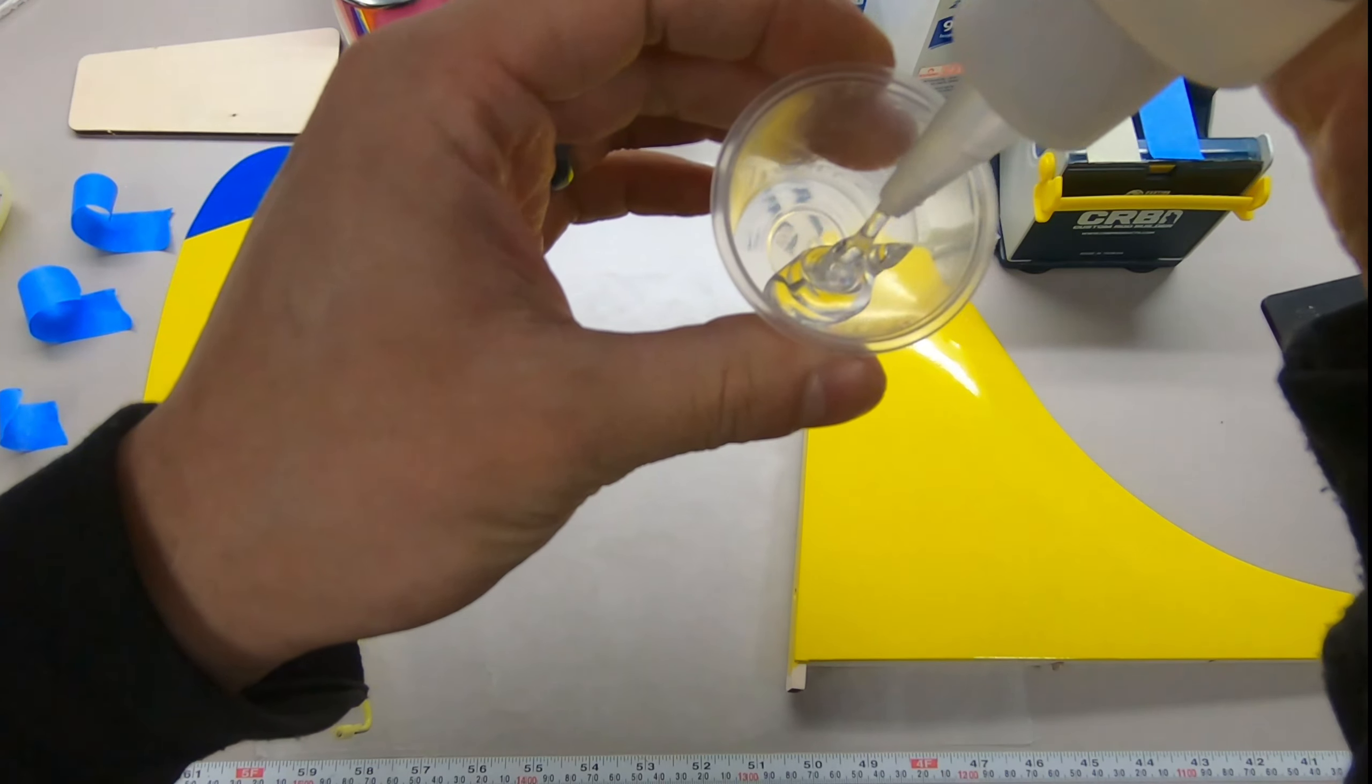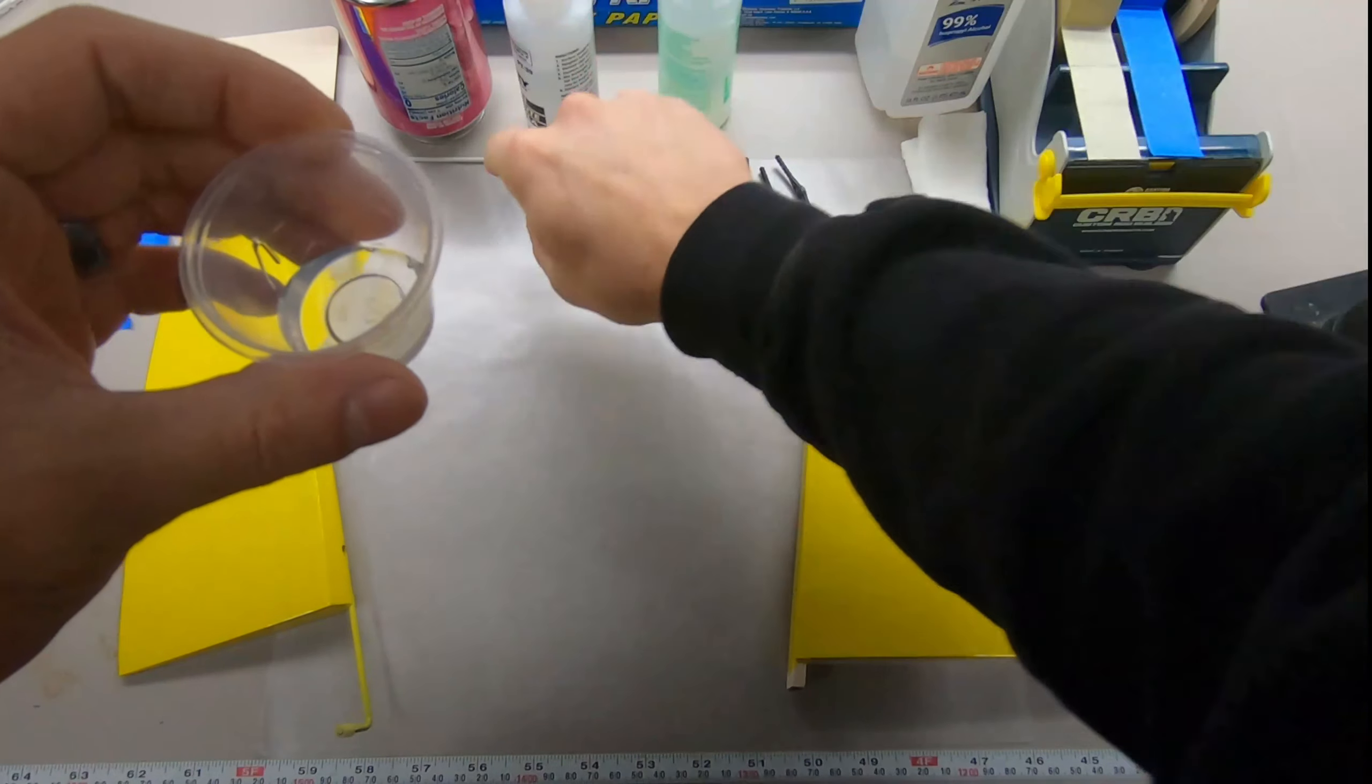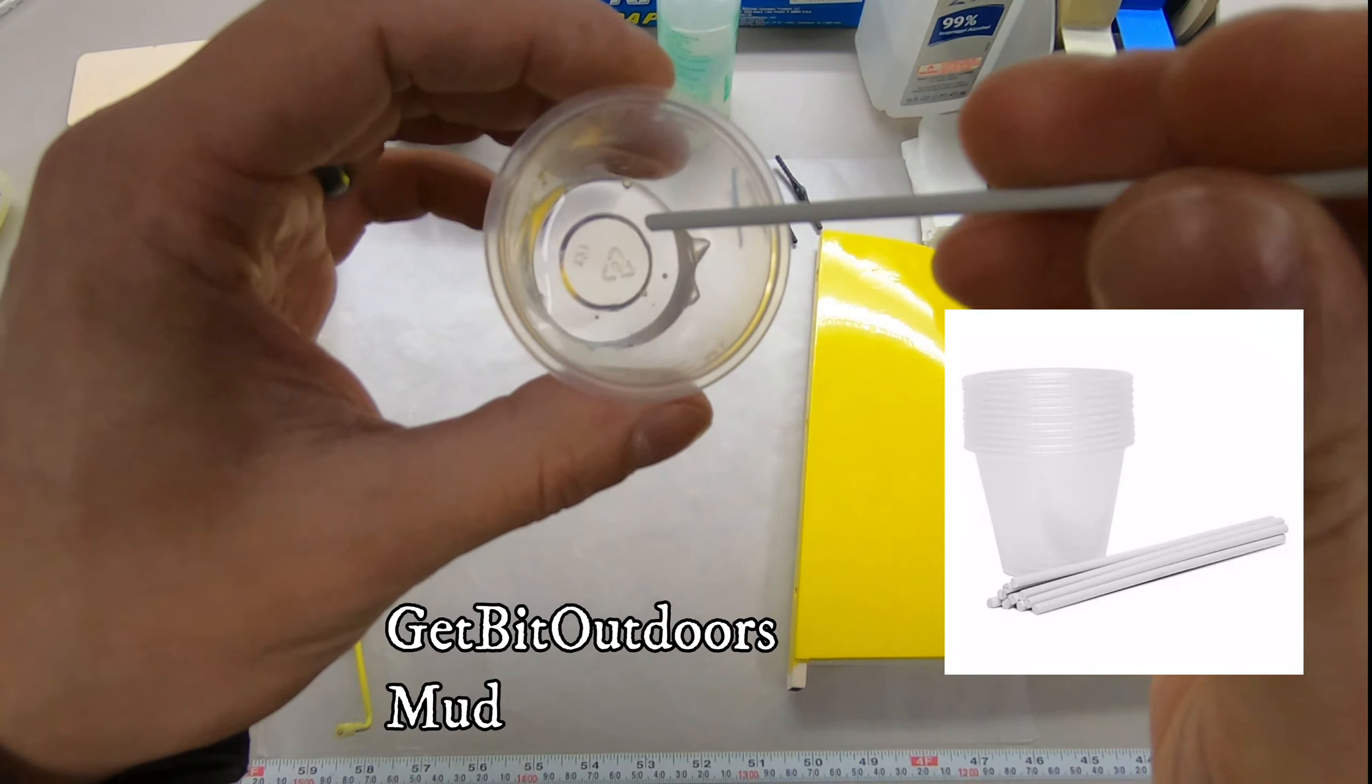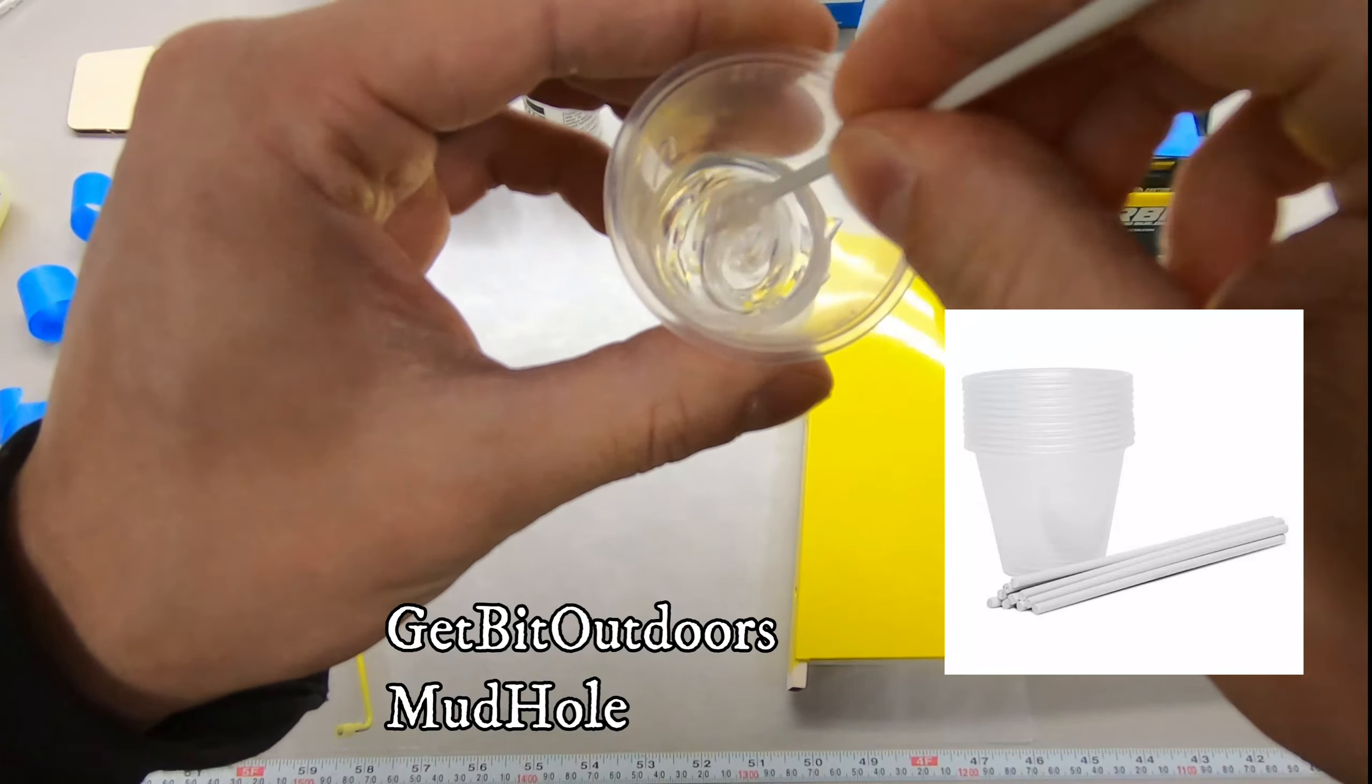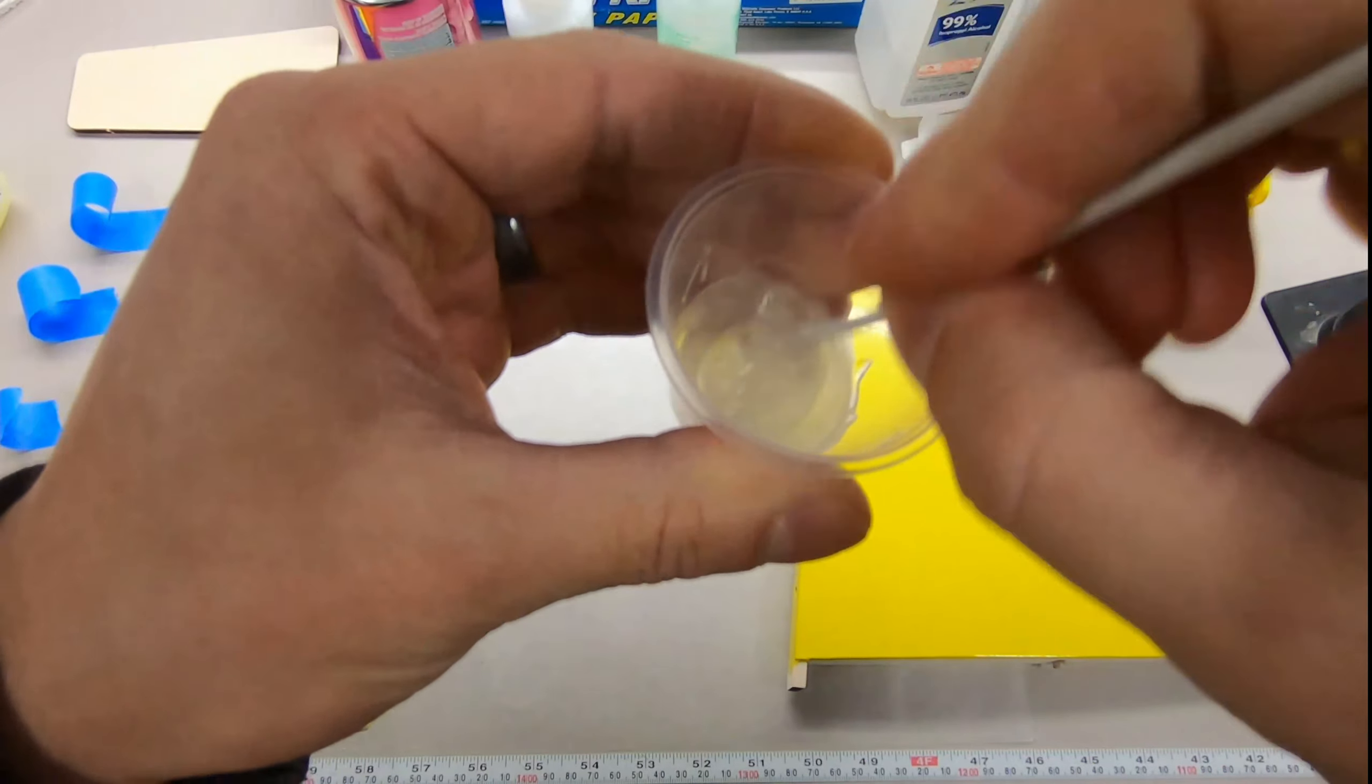Just get some equal amounts in there. These little stir sticks, actually get them from rod building company. It's called Get Bit Outdoors or Mud Hole. They both sell them. It's actually got this little cup from two.